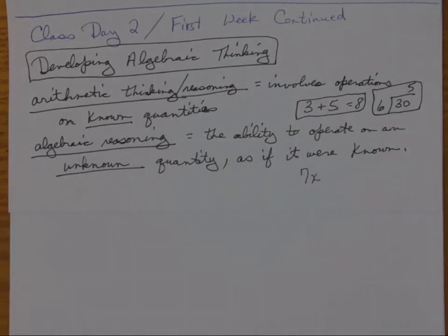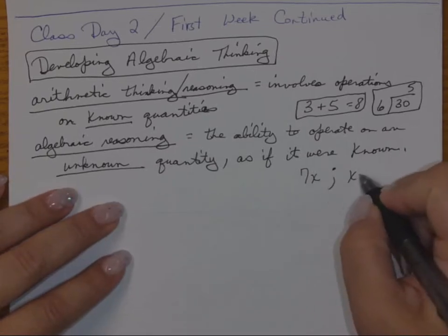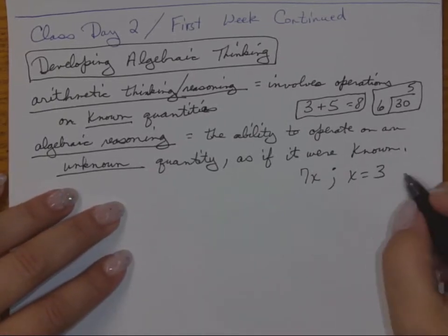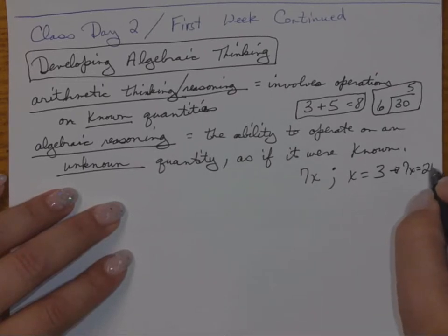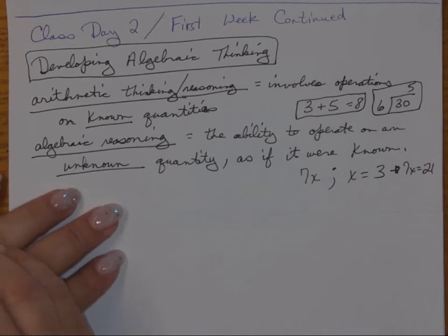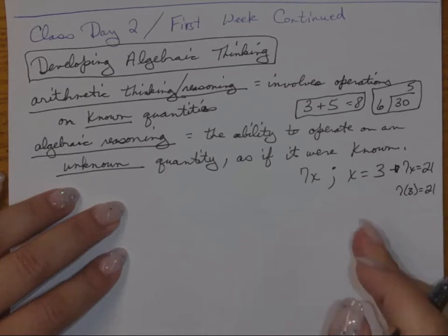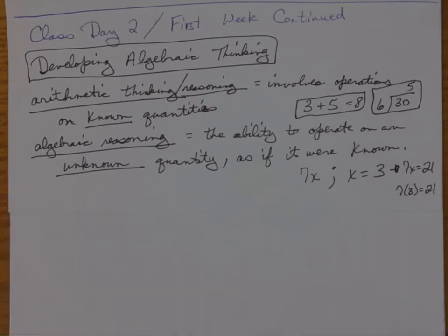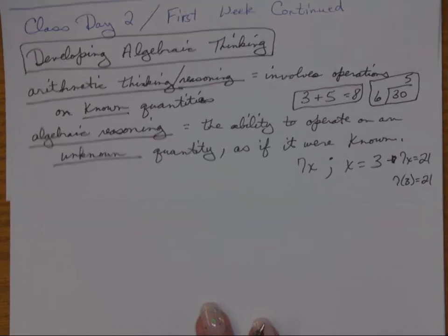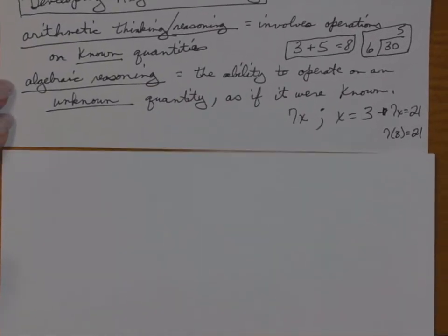Whenever we say we're going to multiply seven times x, you're saying that even though you don't know what x represents, you can multiply it by seven. So if x equals three, then seven x equals 21 — you're doing known operations on something unknown, which is what a variable is. We start making students think more abstractly by bringing the alphabet into their math world, and that is usually when things start going a little haywire.